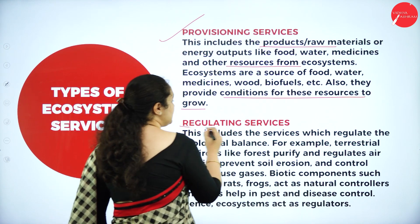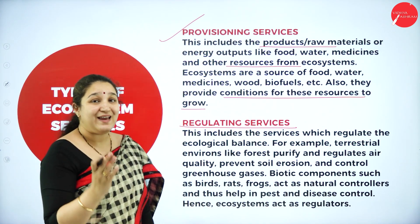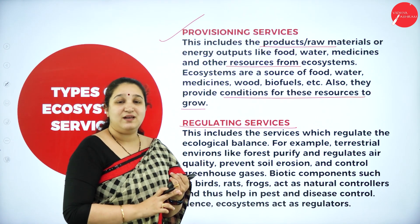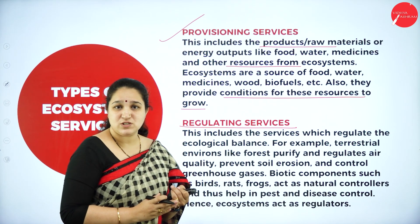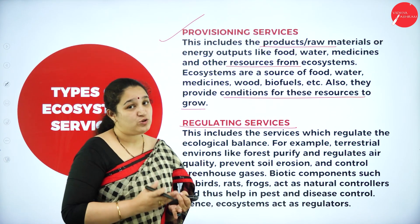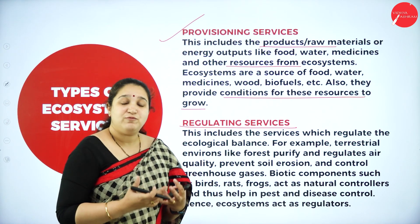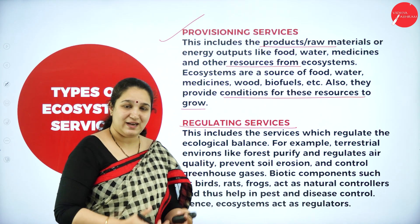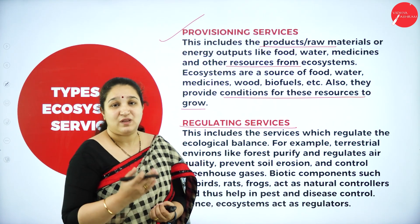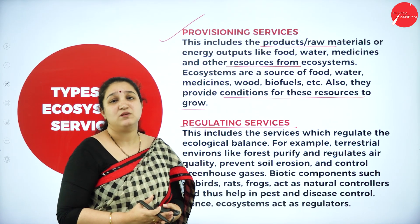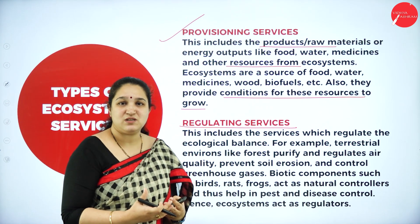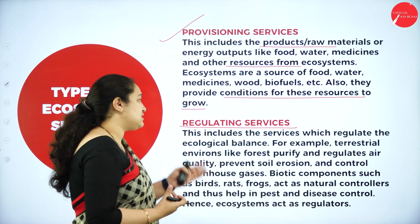Next are regulating services. If there is a forest, the forest will ensure there is clean air for us, so air pollutants are reduced. Forest also ensures there is no soil erosion, landslides can be controlled, and we have enough groundwater. The groundwater acts as a sponge and absorbs all the rainwater, and the groundwater table is also managed because of the forest. The ecosystem controls several things for us humans — we call that regulating services.